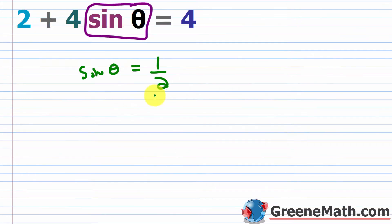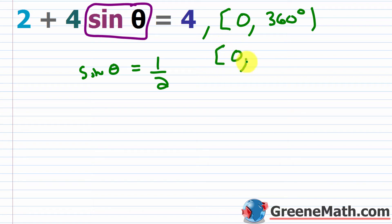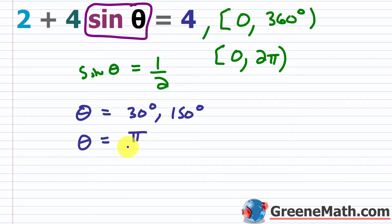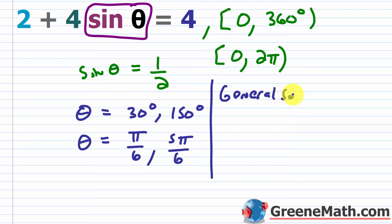For the restricted domain from 0 to 360 degrees, theta equals 30 degrees and 150 degrees. In radians (0 to 2 pi), theta equals pi over 6 and 5 pi over 6. For the general solution: {30° + 360°n, 150° + 360°n} in degrees, or {pi/6 + 2pi·n, 5pi/6 + 2pi·n} in radians, where n is any integer.